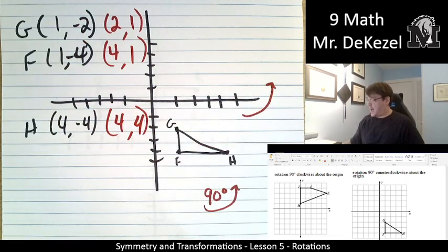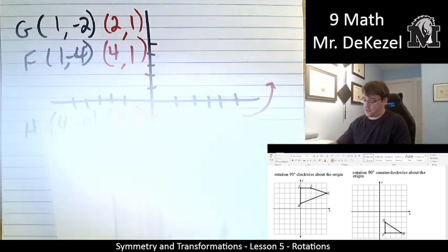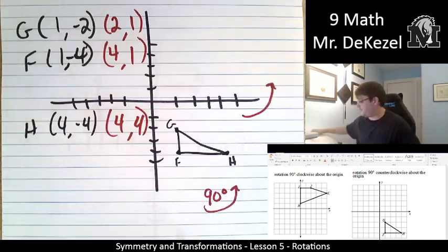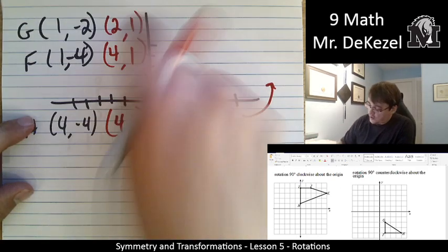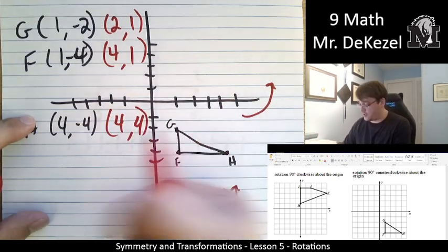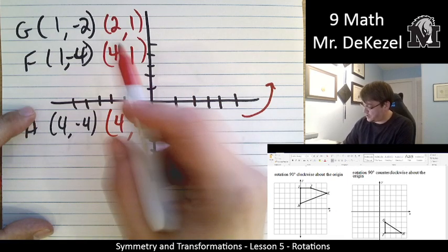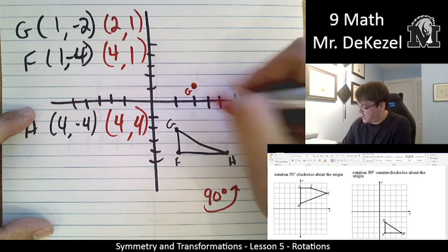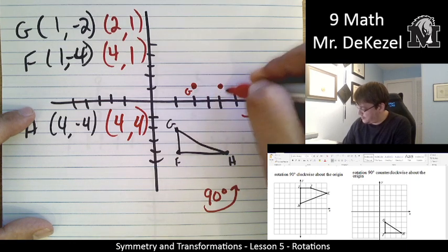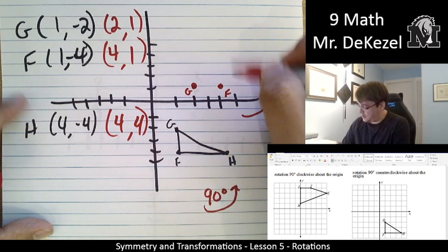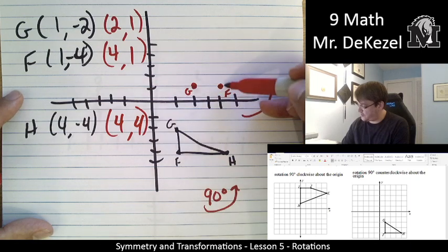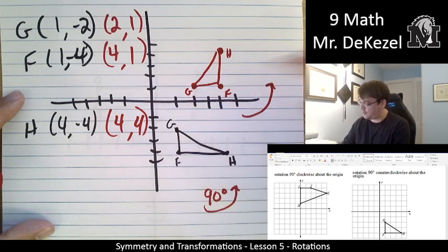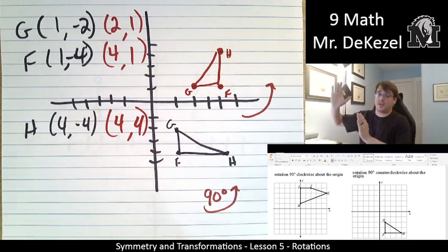Then we're going to apply the sign for this quadrant. That's positives all around. Everything is positive. So we're going to leave all of these signs positive. Point 2, 1, that's point G. Point F is 4 over and 1 up. And then H is 4 over and 4 up. We have our beautiful triangle, just rotated up.